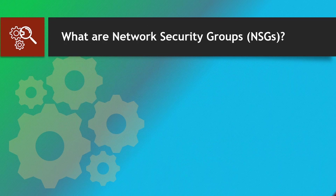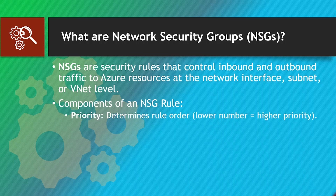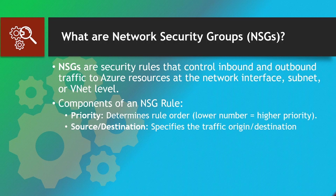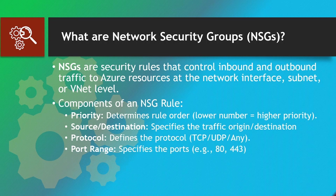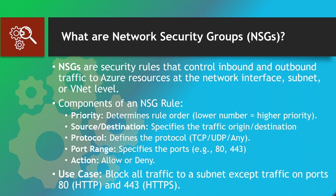What are Network Security Groups (NSGs)? NSGs are security rules that control inbound and outbound traffic to Azure resources at the network interface, subnet, or VNet level. Components of an NSG rule: Priority — determines rule order; lower number equals higher priority. Source/Destination — specifies the traffic origin/destination. Protocol — defines the protocol (TCP/UDP/any). Port range — specifies the port (e.g., 80, 443). Action — allow or deny. Use case: block all traffic to a subnet except traffic on ports 80 (HTTP) and 443 (HTTPS).